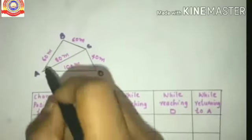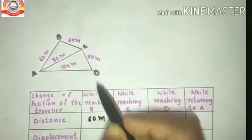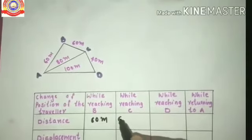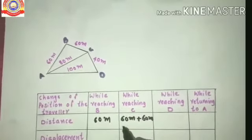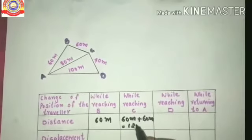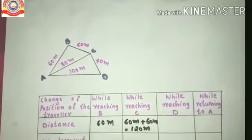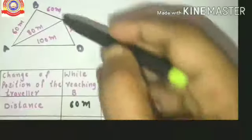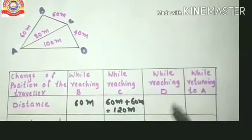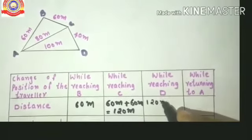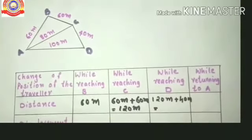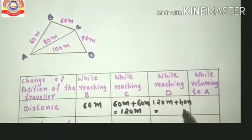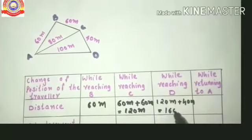Then, what about the next position? The object starts from A, reaches B, then reaches position C. So that is 60 metres plus 60 metres — from A to B is 60, then B to C is again 60, so the answer is 120 metres. While reaching D, we add 60 + 60 + 40 metres, giving 120 + 40 = 160 metres.